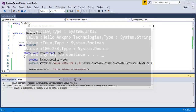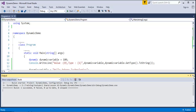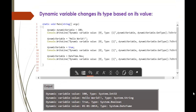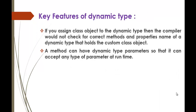And that's what we expected and that's what we saw in this code. Now we will jump into Visual Studio to look at key features of dynamic type. For example, if you assign a class object to the dynamic type, the compiler will not check for correct methods and property names of the dynamic type that holds the custom class object.